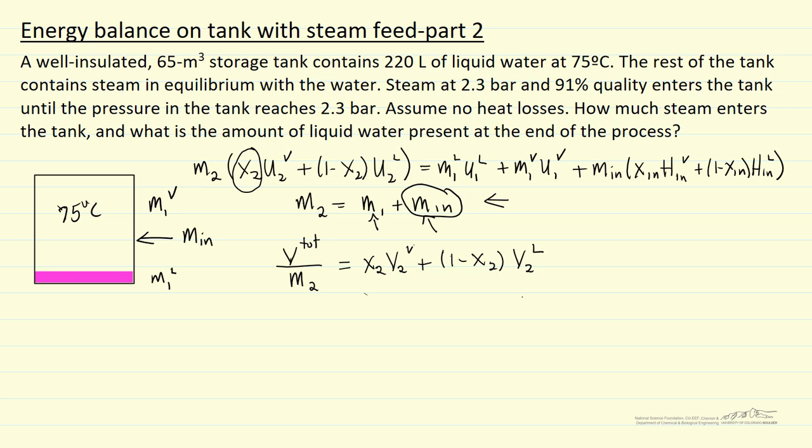We know all the rest. What we have in this energy balance is our final quality times the internal energy per kilogram of vapor, one minus that final quality internal energy liquid. We started with a mass liquid that we can calculate, so we look up the internal energy at 75 degrees saturation conditions to get U1 liquid, likewise for U1 vapor. And then the mass n, that's one of our unknowns and the quality n is given as 0.91 and we can look at these enthalpies also in the steam tables.